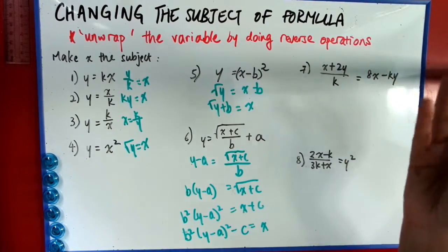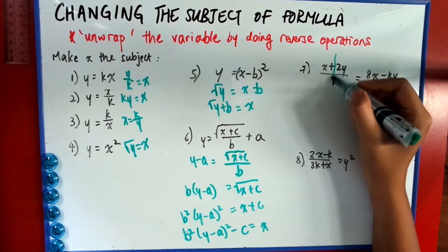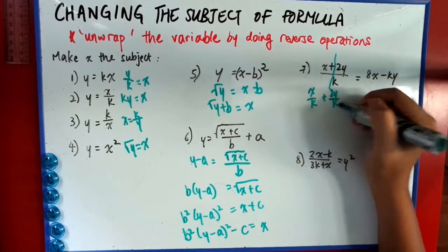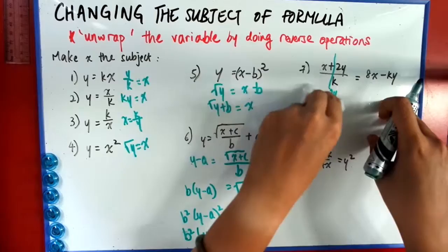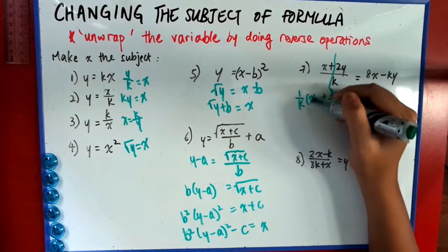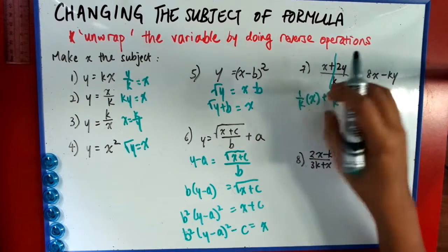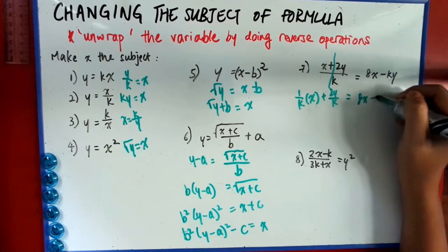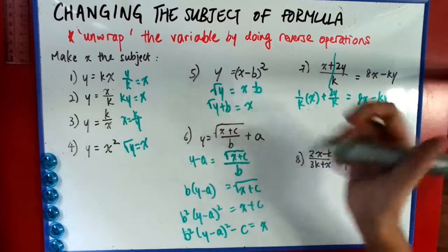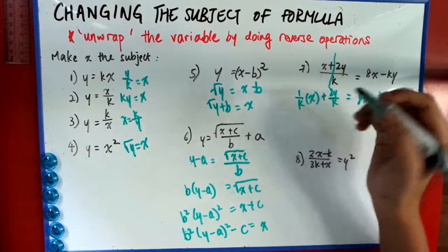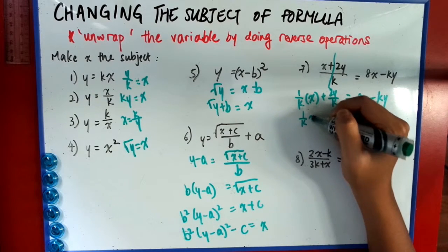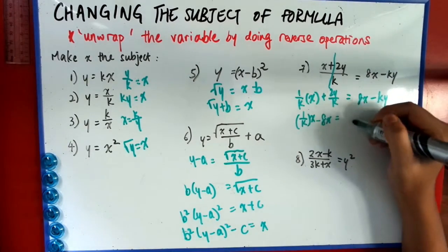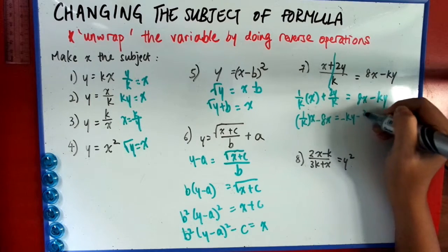So what you have to do is you have to isolate x out. So what I would do is I would split this fraction into two. So I would get x over k plus 2y over k. But then I want to isolate x. So what I would write, I would write this as 1 over k times x. You see, because now this looks more, x looks more isolated like this. It's clearer for me to see and clearer for you to see as well. Then you have to shift all the x to one side. It doesn't matter which side. In a way, it's fine. So let's say 1 over k, x. I'll put this like that. Minus 8x. Then I'm going to shift the non-x to the other side. It will be minus ky minus 2y over k.